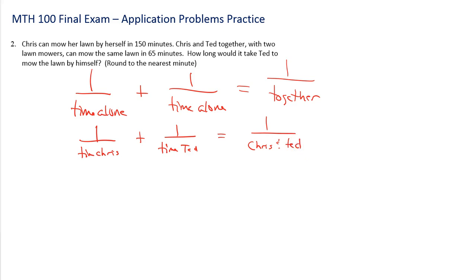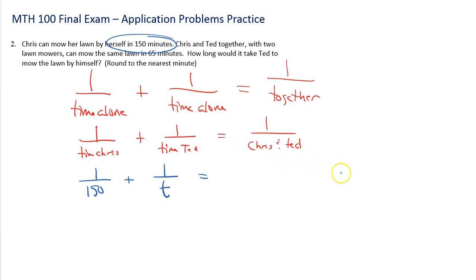So it would be one over the time for Chris plus one over the time for Ted equals one over the time for Chris and Ted together. Chris can do this in 150 minutes, so we have one over 150 plus one over T — we don't know Ted's time, so we use variable T. The together time is 65 minutes, so that's equal to one over 65. This is the equation we need to solve.